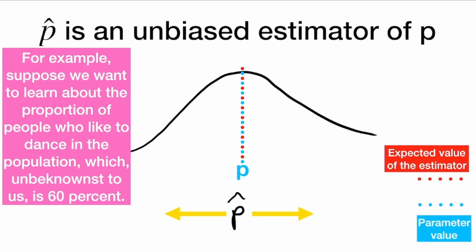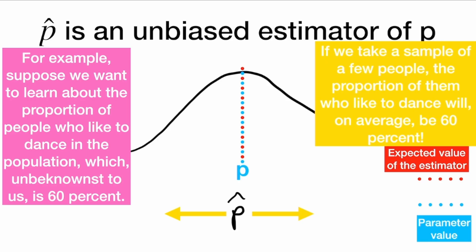Similarly, p-hat, the sample proportion, is an unbiased estimator of p, the true proportion. Suppose we want to learn about the proportion of people who like to dance in the population, which, unbeknownst to us, is 60%. If we take a sample of a few people, the proportion of them who like to dance will, on average, be 60%. So the estimator, on average, will be the true value that we want to find. We can see that in the picture here — we have our distribution of the random variable p-hat, which is our estimator. It's not always going to be 60%, but on average the two values will line up, and we will be able to estimate the true value of 60%.